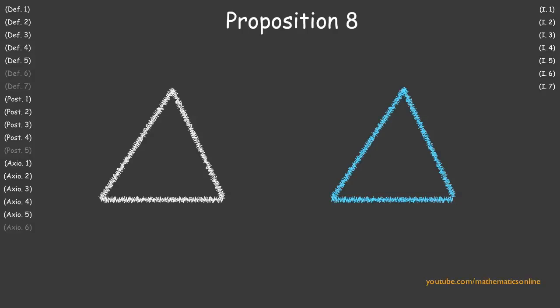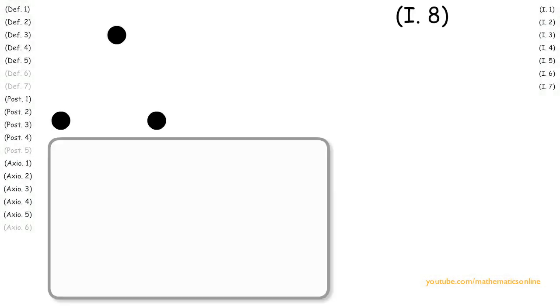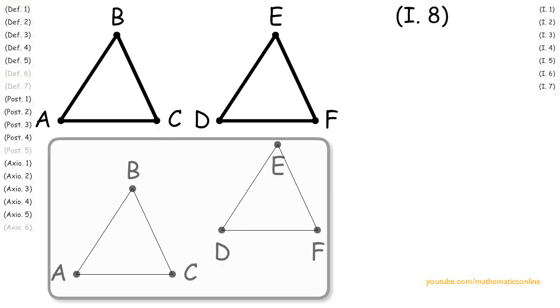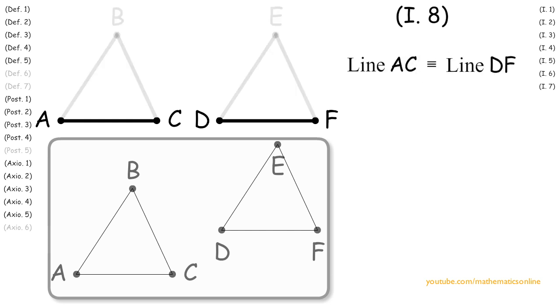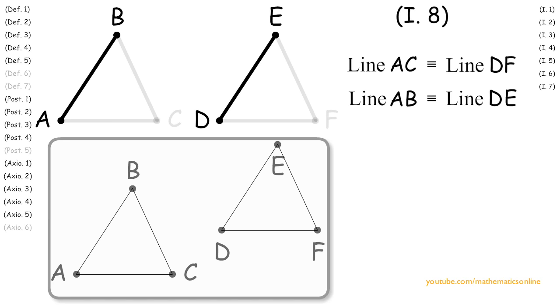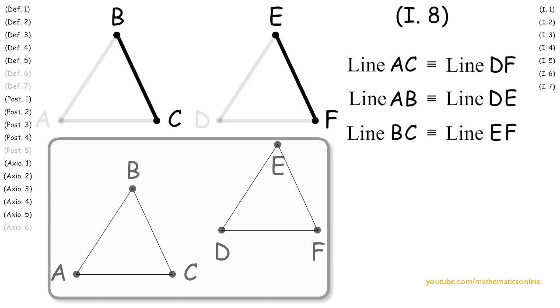In Proposition 8, we proved that if two triangles share a corresponding side, side, and side, then both triangles must be congruent. To begin, we are given triangles ABC and DEF. We are also given that line AC is congruent to line DF, line AB is congruent to line DE, and line BC is congruent to line EF.